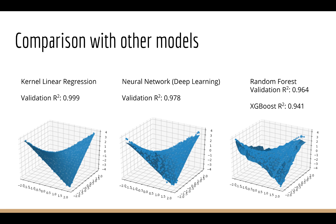In my deep learning course, we do a visual example of neural network regression, and one thing that's clear is that the neural network has some trouble predicting the values at the outer edges of this function. You can see that kernel linear regression does not have this problem. It's interesting to compare it to another popular model, the random forest — it turns out to do even worse on this problem. Even the popular tree ensemble XGBoost doesn't perform well.